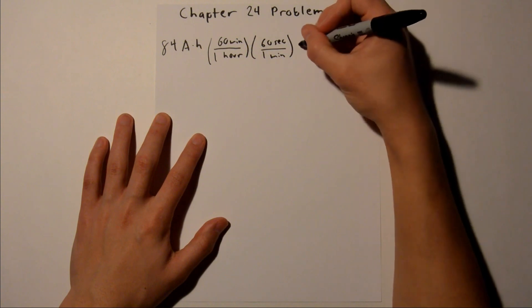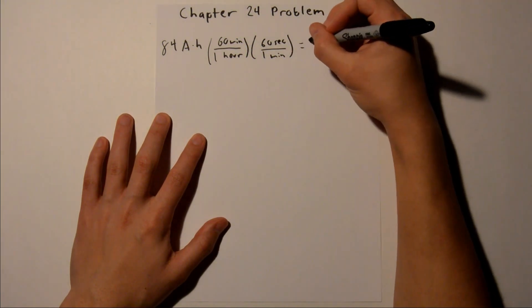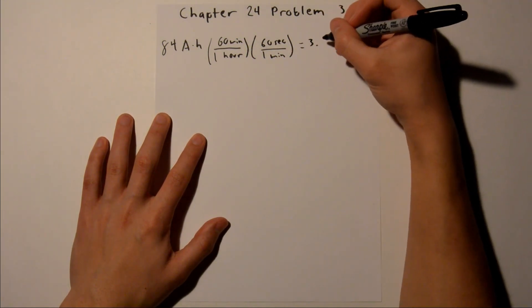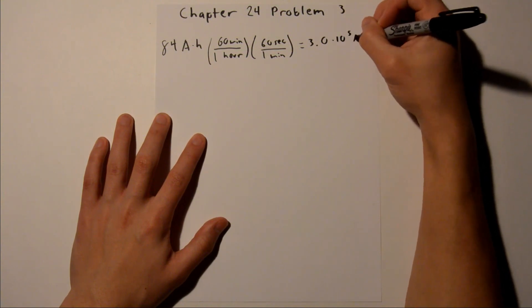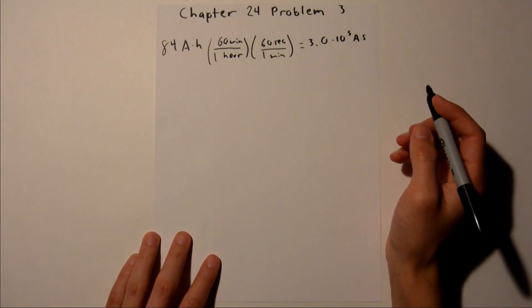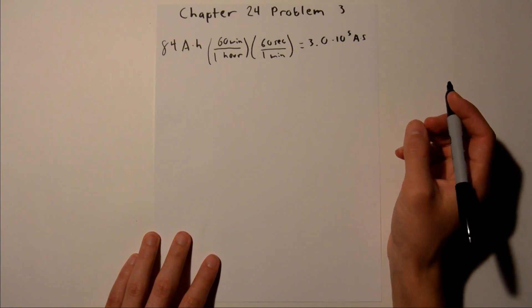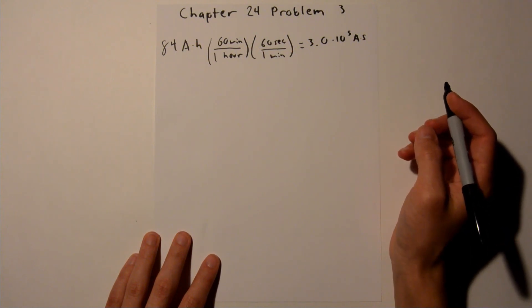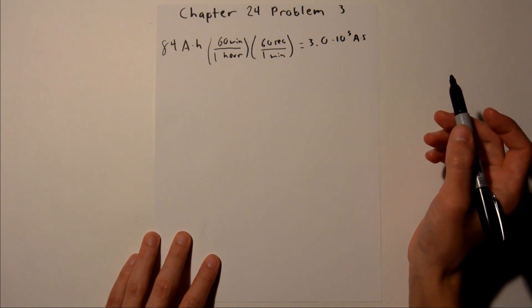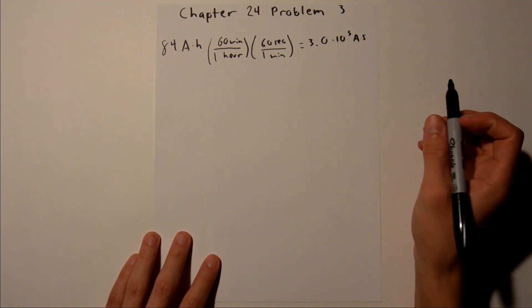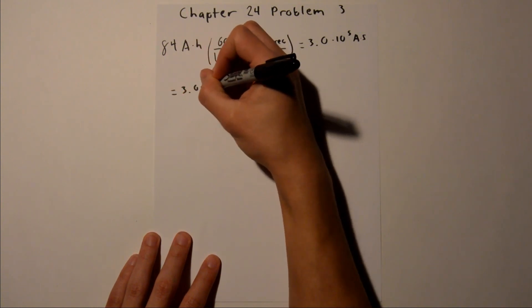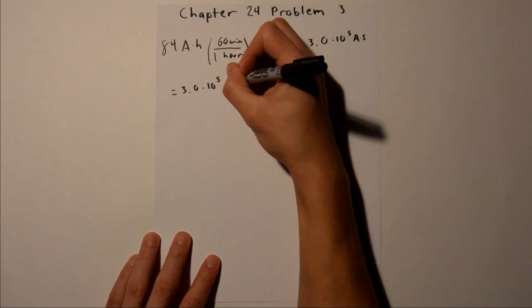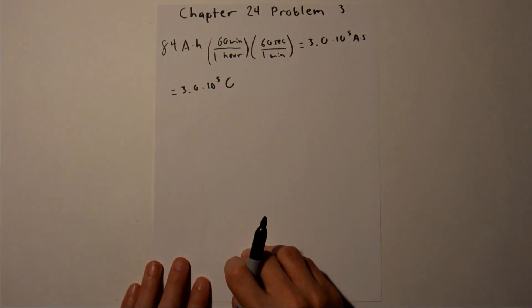And if you plug that into your calculator, you should get 3.0 times 10 to the 5th amp seconds. And a coulomb is defined as the amount of electricity that can flow in 1 second at a current of 1 amp. So amp seconds is equal to coulombs, so this is equal to 3.0 times 10 to the 5th coulombs. And that is going to be our charge.